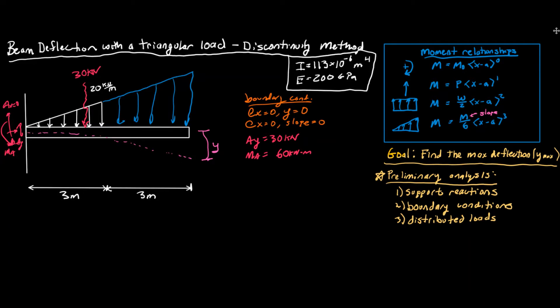So we can use similar triangles. We have 20 is to three, and six meters across here - that's going to be 40 kilonewtons per meter. And since this blue distributed load actually isn't there, we need to do a mirror image of it so the top cancels at the bottom. In reality, this 20 kilonewton per meter triangle load is the only one still applying. So we need to do a mirror image.